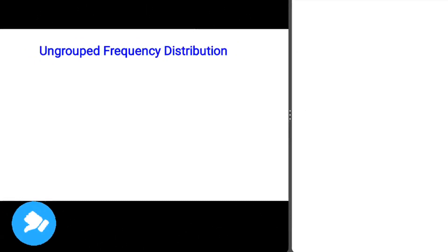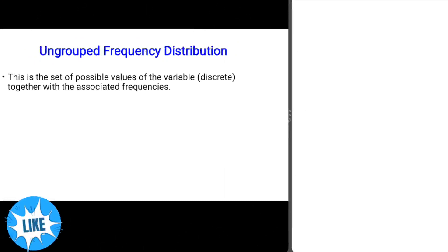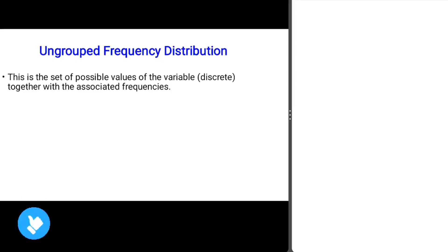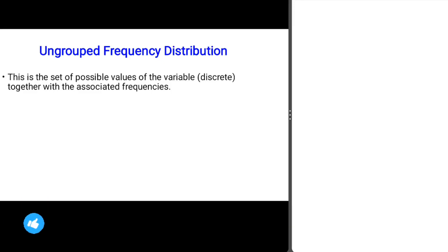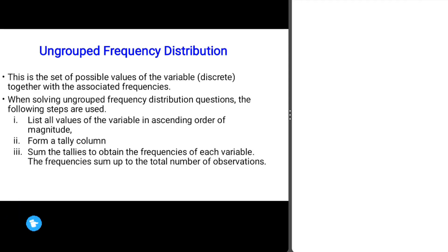What is an ungrouped frequency distribution? An ungrouped frequency distribution is a set of all possible values of a discrete variable, together with the associated frequencies.